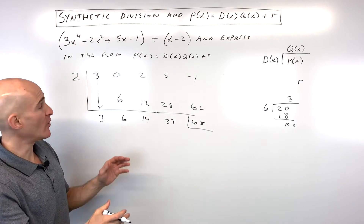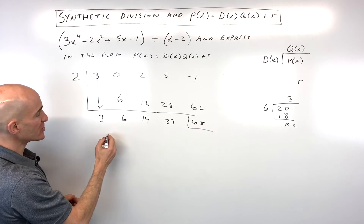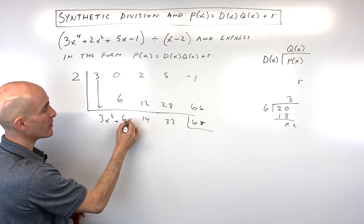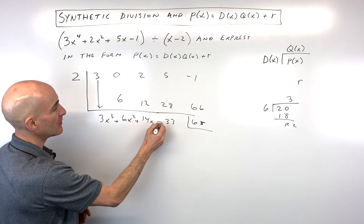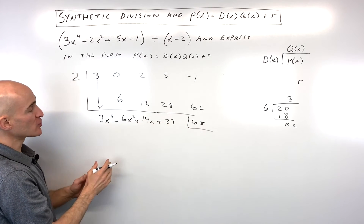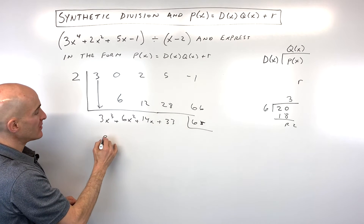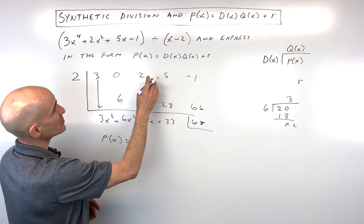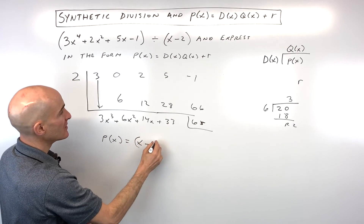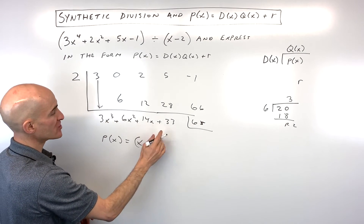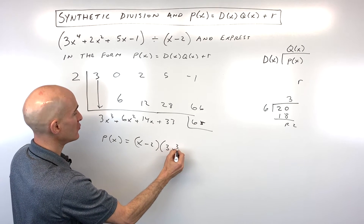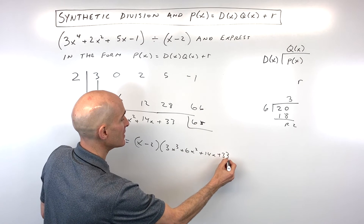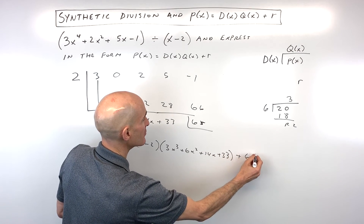Now we want to write our quotient — the quotient is our answer. Because we started at 3x to the 4th, this becomes 3x cubed; it goes down by one degree. So P of x equals our divisor, x minus 2, times our quotient — which is 3x cubed plus 6x squared plus 14x plus 33 — plus our remainder, 65.